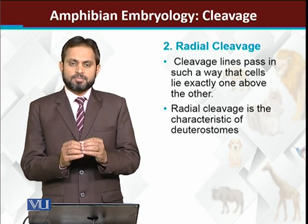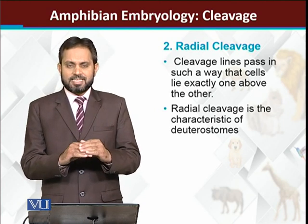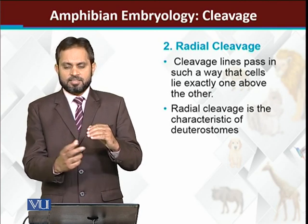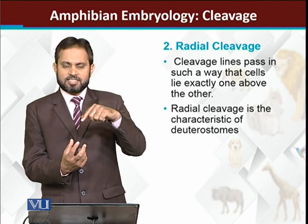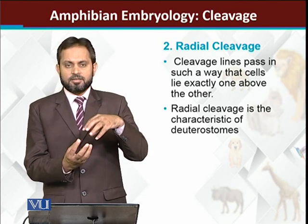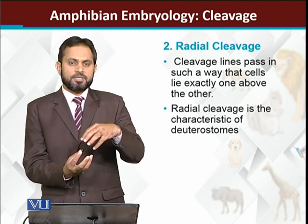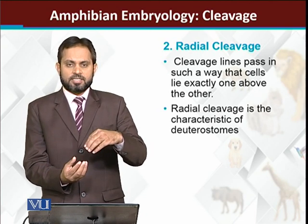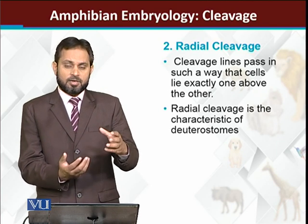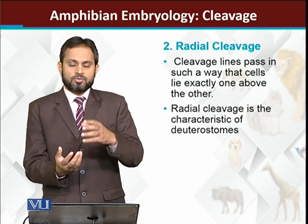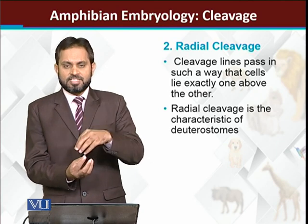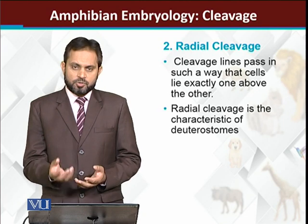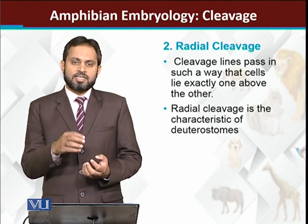During cleavage, the number of cells formed are arranged in tiers — one circle of cells on top of another. Cleavage may be spiral or radial. Amphibians, along with other chordates, belong to the deuterostomes, and in deuterostomes the pattern of cleavage is radial cleavage.